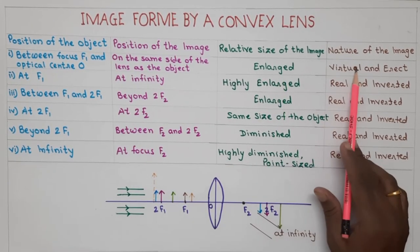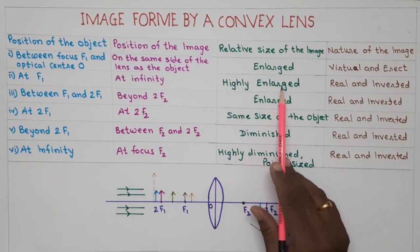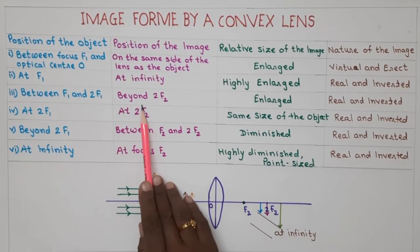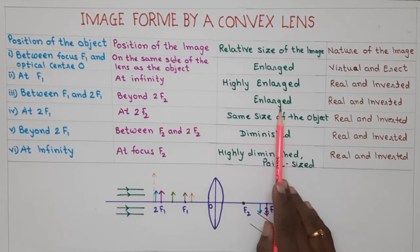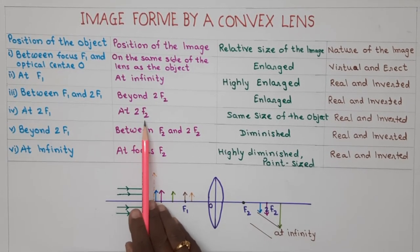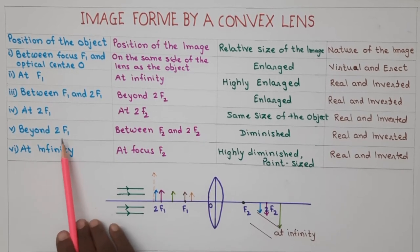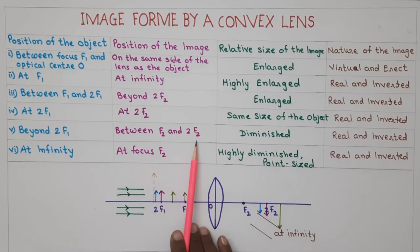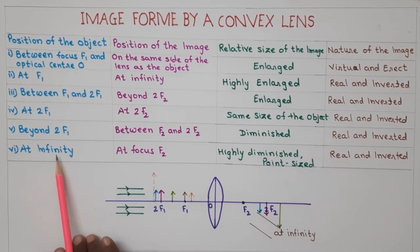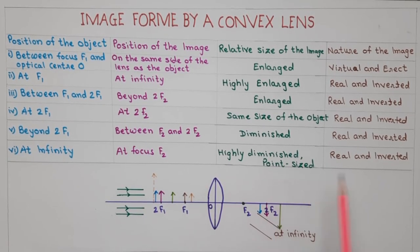Summary of image formation by a convex lens: Between O and f1 — image on same side, enlarged, virtual, and erect. At f1 — image at infinity, highly enlarged, real, and inverted. Between f1 and 2f1 — image beyond 2f2, enlarged, real, and inverted. Beyond 2f1 — image between f2 and 2f2, diminished, real, and inverted. At infinity — image at focus f2, highly diminished, point sized, real, and inverted.